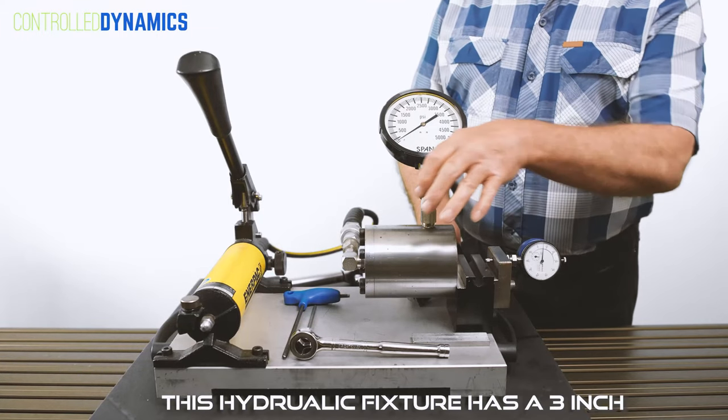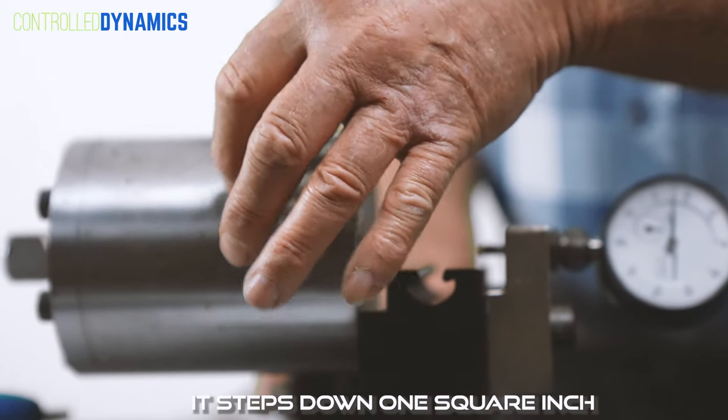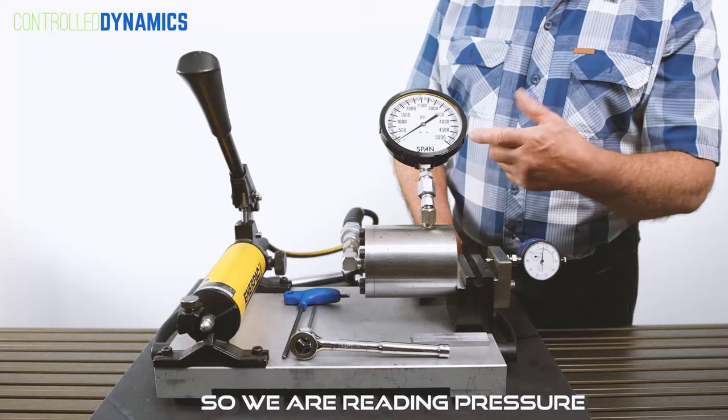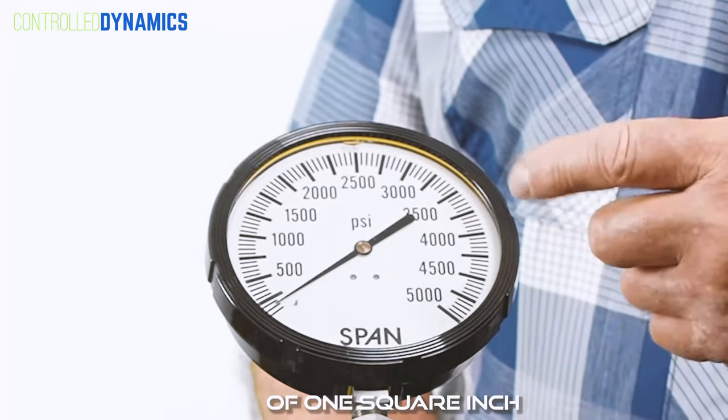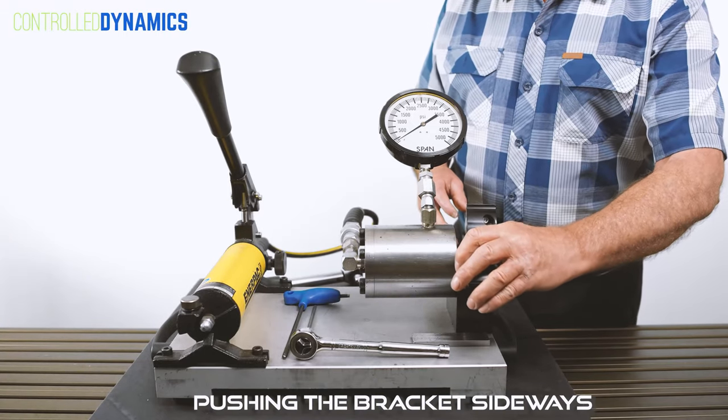This hydraulic fixture has a three inch hydraulic cylinder that steps down to one square inch. There's oil, then another one square inch piston after that. So we're reading pressure at one square inch, which gives us pressure pushing the bracket sideways.